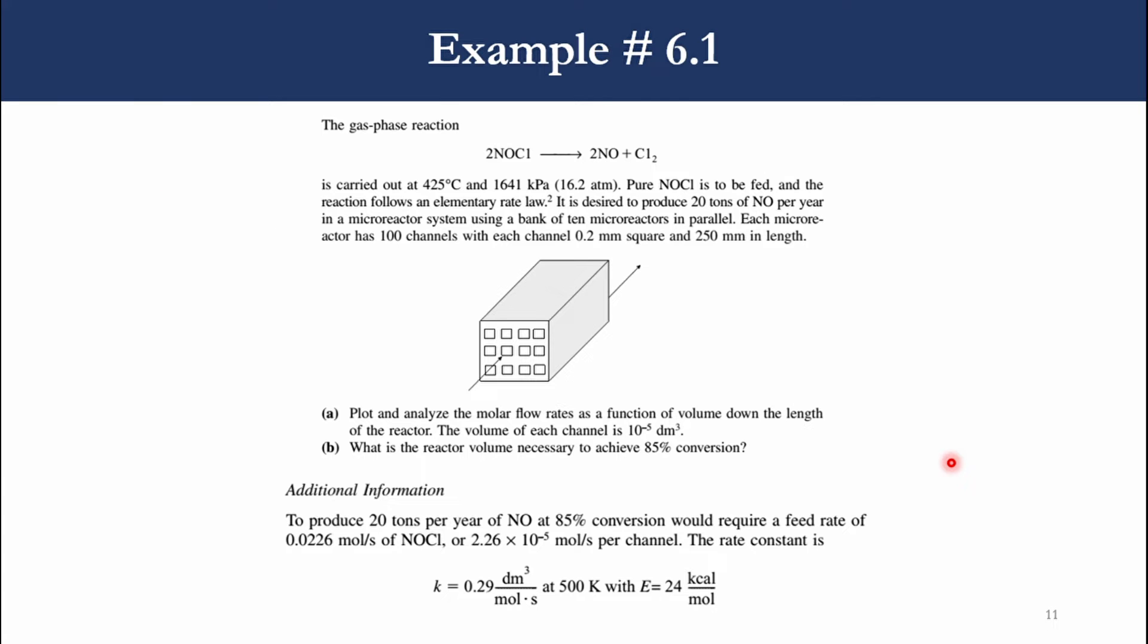Now moving to example number 6.1, which states that the gas phase reaction 2 moles of NOCl goes to 2 moles of NO plus 1 mole of Cl2, or 2A goes to 2B plus C, is carried out at 425 degrees centigrade and 16.2 ATM. Pure feed is to be fed and the reaction follows an elementary rate law. It is desired to produce 20 tons of NO per year in a micro reactor using a bank of 10 micro reactors in parallel. Each micro reactor has 100 channels with each channel 0.2 mm square and 250 mm in length. These tasks will be divided into two parts: simple manual calculations and polymath.